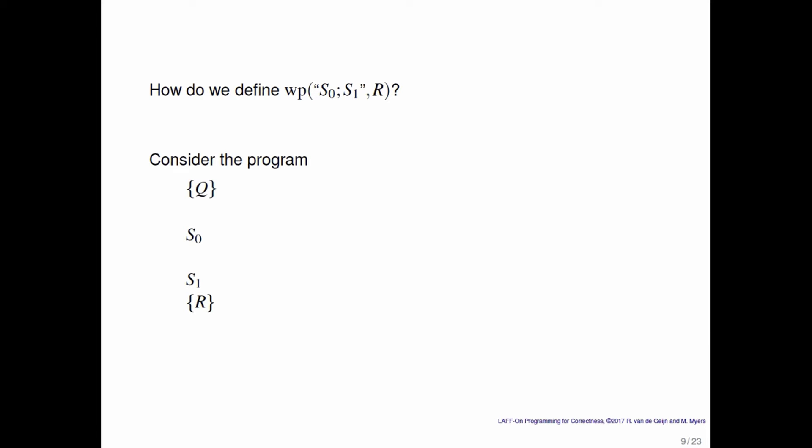Well, let's think about this for a second. Let's consider the program where we have them written above each other. What do we know? Well, we know that if we want to end up in a state where R is true, then just before S1 is executed, the weakest precondition of S1 leaving you in a state where R is true must be true.